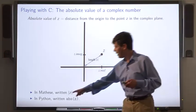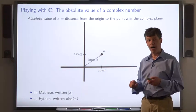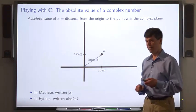In math, we would write it with vertical bars. And in Python, the absolute value of a complex number is written abs of complex number z.